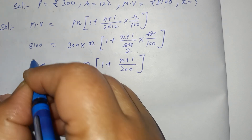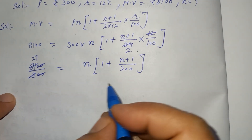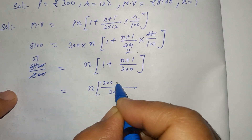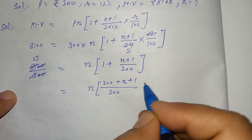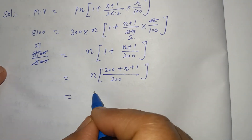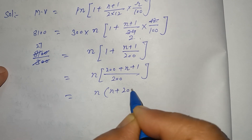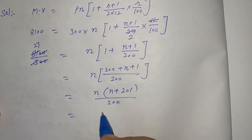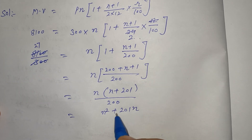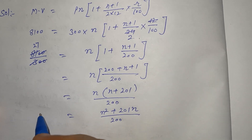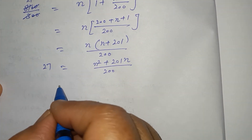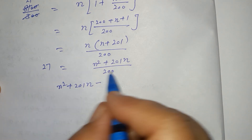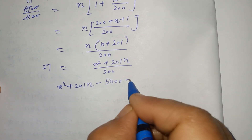Zeros with two zeros cancel. 27, threes are 81. Either solve karo. N times 200 LCM — 200 plus n plus 1, n times (n plus 201) upon 200. Kitna aagaya: n squared plus 201n upon 200. Idhar kitna hai: 27. To kya aagaya: n squared plus 201n minus 27 into 2000, minus 54 into 100 is equal to 0.